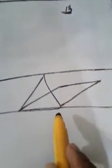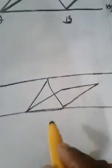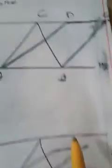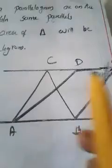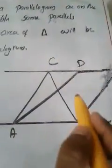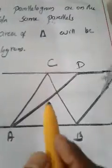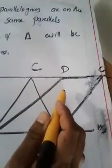Being between parallel lines means the lower portion of the figure must lie on the lower parallel line and the upper portion on the upper parallel line. This applies to both the triangle and the parallelogram. If the upper portion is not on the upper parallel line, that configuration is not valid — you must draw them as described.